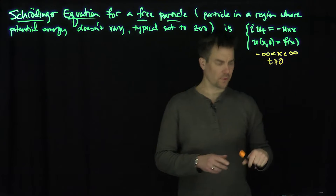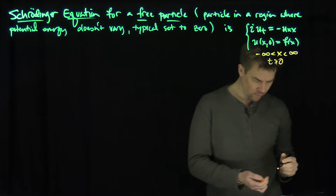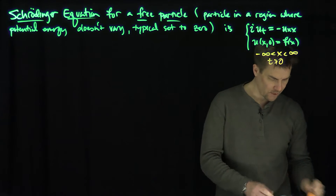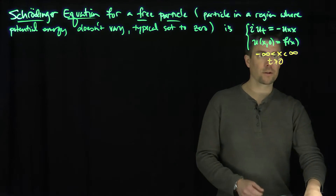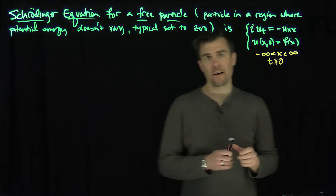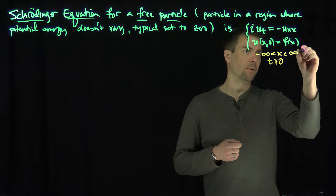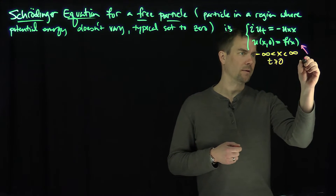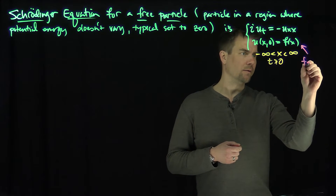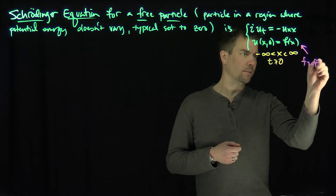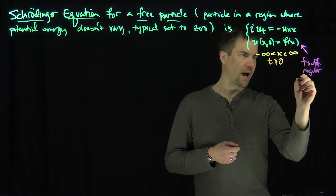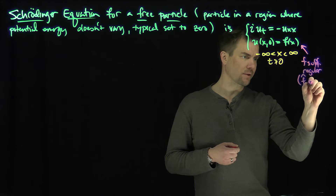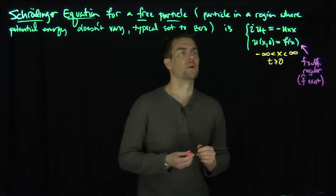It's actually time reversible, so it doesn't really matter if we go forward or backward in time. I want f to be sufficiently regular — in other words, f̂ (the Fourier transform of f) needs to exist for this calculation.